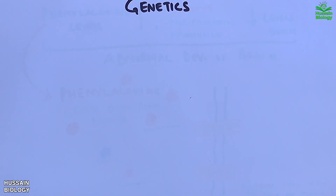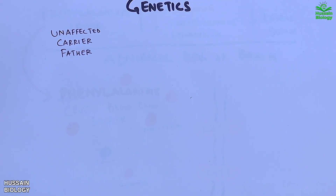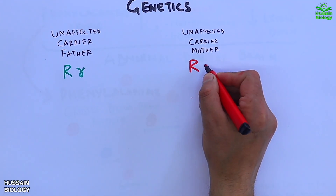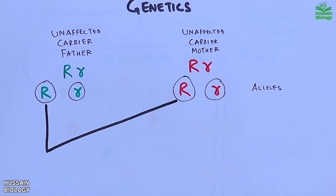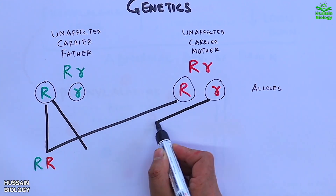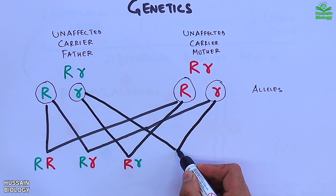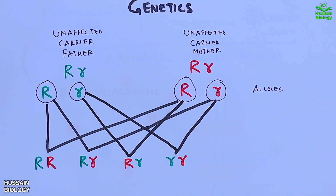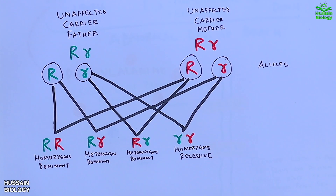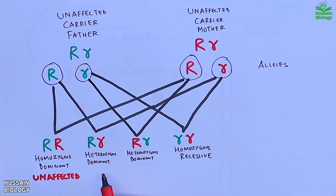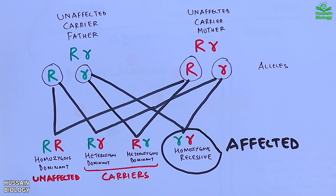Regarding the genetics of phenylketonuria: on the left we have an unaffected carrier father with capital R and small r alleles, and on the right an unaffected carrier mother with capital R and small r alleles. Upon cross, we get capital R capital R (homozygous dominant, unaffected), capital R small r and capital R small r (heterozygous dominant, carriers like their parents), and small r small r (homozygous recessive, affected). This is the autosomal recessive inheritance of phenylketonuria.